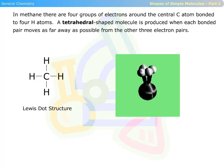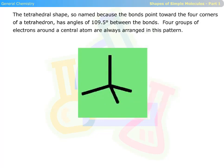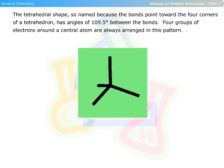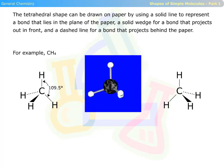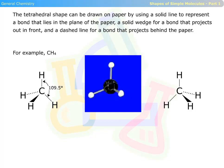In methane, there are four groups of electrons around the central carbon atom bonded to four hydrogen atoms. A tetrahedral-shaped molecule is produced when each bonded pair moves as far away as possible from the other three electron pairs. The tetrahedral shape, so named because the bonds point toward the four corners of a tetrahedron, has angles of 109.5 degrees between the bonds. Four groups of electrons around a central atom are always arranged in this pattern. The tetrahedral shape can be drawn on paper using a solid line for a bond in the plane of the paper, a solid wedge for a bond projecting out in front, and a dashed line for a bond projecting behind the paper.